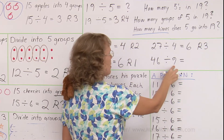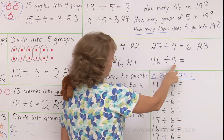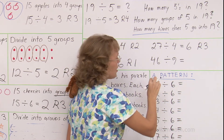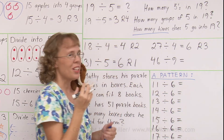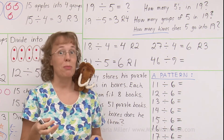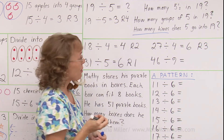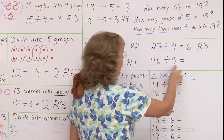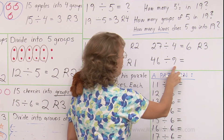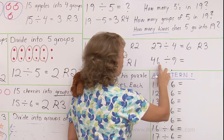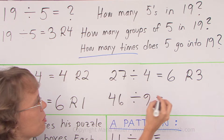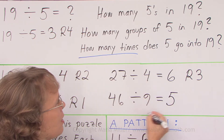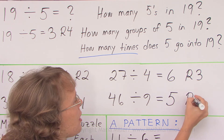How many times does 9 go into 46? You need to know your 9 times table. 4 times 9 is 36. 5 times 9 is 45 — very close. So yes, 5 times, with remainder 1.